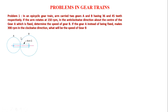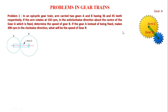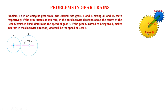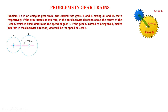Gear A is meshing with gear B connected by an arm. First condition: gear A is fixed and we need to determine the speed of gear B. Second condition: gear A is rotating with 300 RPM in the clockwise direction and we have to determine the speed of gear B. The gear configuration shows gear A, gear B, and arm C. Let us assume the small one is gear A and the big one is gear B.